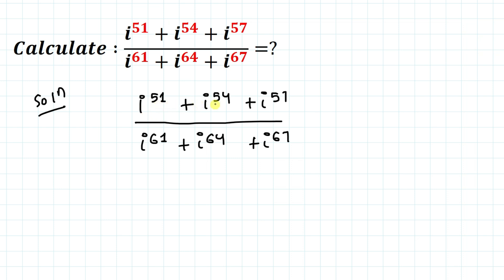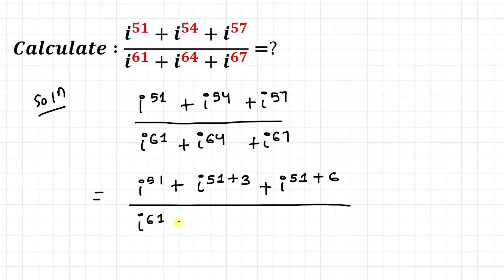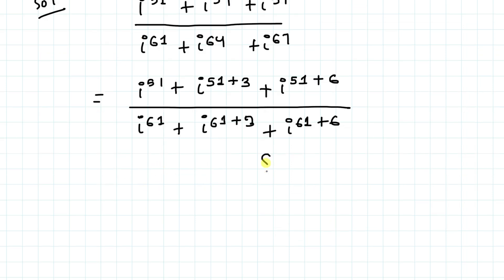Without any delay, let's start the solution. One thing you can notice is that the powers are all in the 50s and 60s. So in the next step, we can rewrite: iota to the power 54 as iota to the power 51 plus 3, and iota to the power 57 as iota to the power 51 plus 6. Similarly, iota to the power 64 as iota to the power 61 plus 3, and iota to the power 67 as iota to the power 61 plus 6.